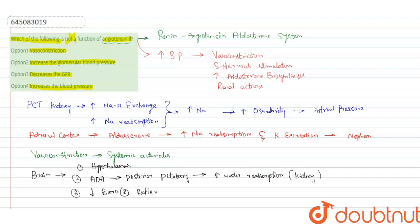This diminishes the baroreceptor response to an increased blood pressure. Now coming to the given options, vasoconstriction is one of the functions of angiotensin 2. Coming to option 2, increased glomerular blood pressure is not the function of angiotensin 2.